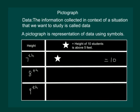For the eighth class she marked two stars, implying that 20 students in the eighth standard have height above 5 feet. She marked two and a half stars, implying that 25 students in the ninth standard are above 5 feet.